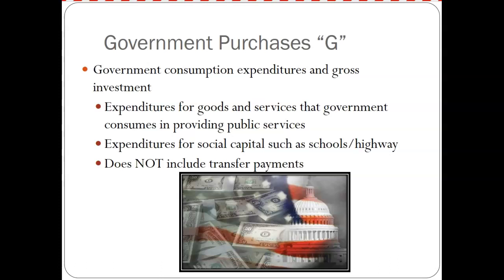Now we're up to government purchases — government consumption expenditures and gross investments. These are expenses for goods and services that government consumes in providing public services. The government still buys final goods: they pay for road repair and construction, they pay for firefighter engines, and everything in between. This does not include transfer payments like social security — that doesn't count, even though it's an expense. No good or service was bought with that social security payment. Unemployment or veterans benefits don't count either. It's specifically on goods and services.